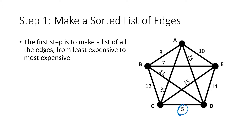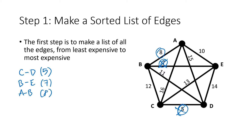The cheapest edge is from C to D, which costs 5. We check that off and keep going. The next lowest is a 7 from B to E — that's my next cheapest edge. I'm crossing them out just so I don't accidentally use the same number twice. Next up is an 8 from A to B, and then a 10 from A to E.